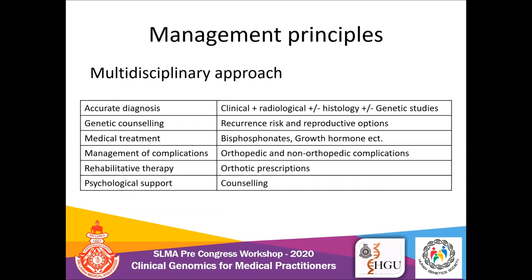Here are the key management principles. We always have to adhere to a multidisciplinary approach. After accurate diagnosis, apart from medical treatment, management of complications, rehabilitative therapy, and psychological support, we need to provide strong genetic counseling — educating about recurrence risk and reproductive options, laying down all options on the table for the patient to facilitate their decision-making.